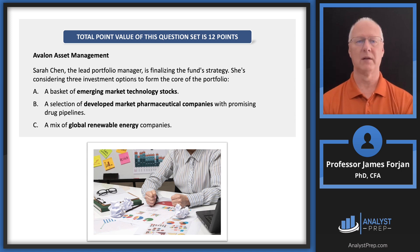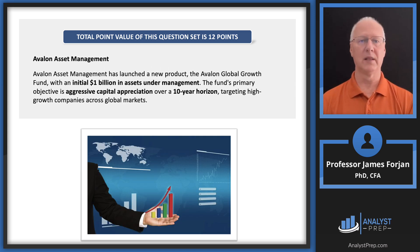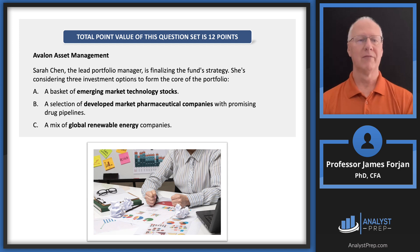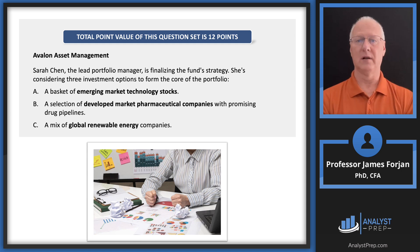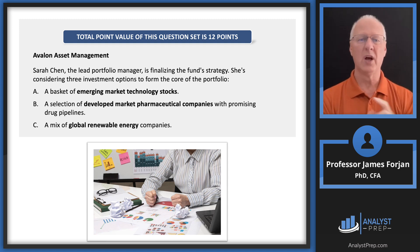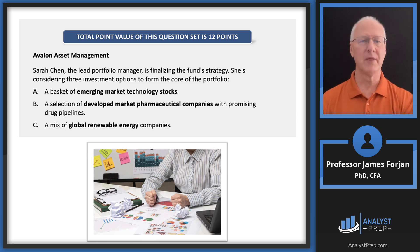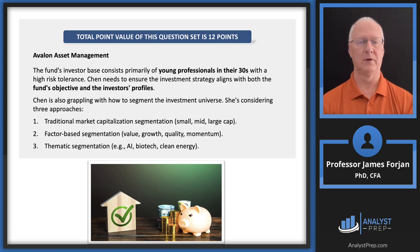Option B is a selection of developed market pharmaceutical companies. But we're not calling this the Avalon Global Growth Pharmaceutical Sector Fund — so maybe selected pharmaceutical companies with promising drug pipelines have high growth, but it's probably on the periphery. We don't want to focus on that because of systematic versus unsystematic risk concerns. And then there are global renewable energy companies — I'll address those when we get to the question.